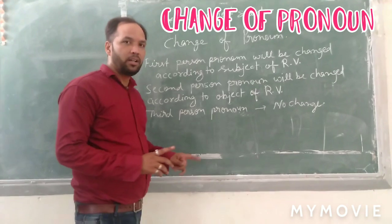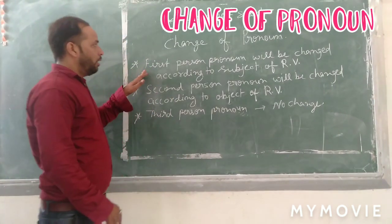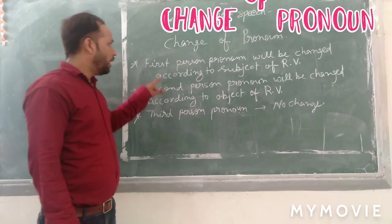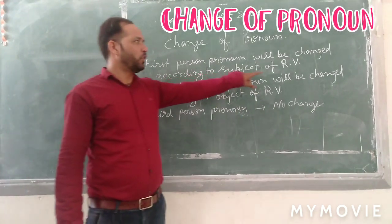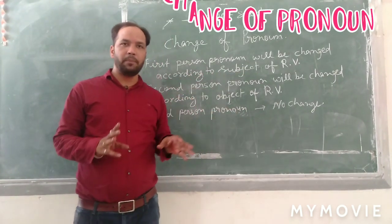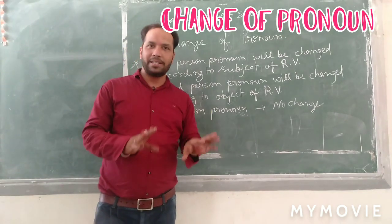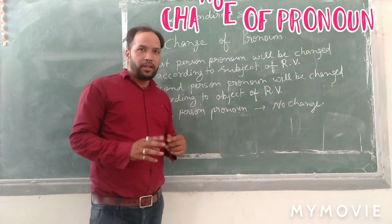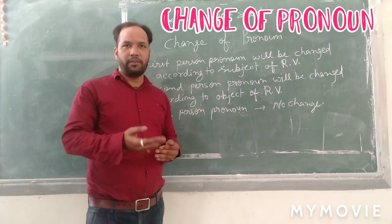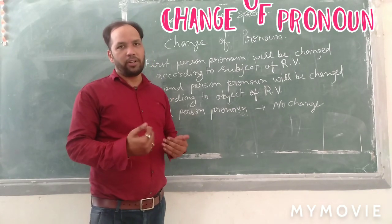Let's see — look at the blackboard. The first person pronoun will be changed according to the subject of R.B. When we are in that sentence, there are two facts: one part is in inverted commas and one part is outside inverted commas.